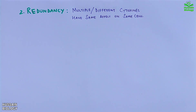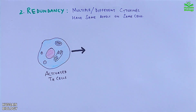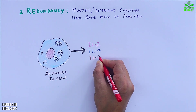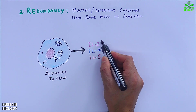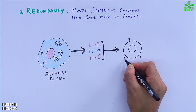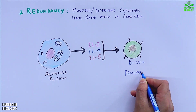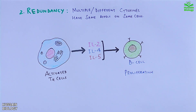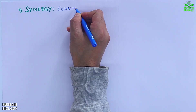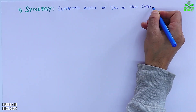The second property is redundancy, where multiple or different cytokine molecules have the same effect on the same cells. Like we have the activated T helper cell secreting interleukin-2, interleukin-4, and interleukin-5 — all three interleukins can target B cells to mediate proliferation.